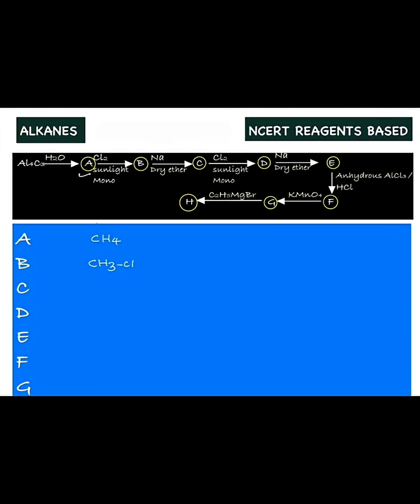B on reaction with sodium dry ether, alkyl halide on reaction with sodium dry ether that is Wurtz reaction, you will be getting CH3CH3 that is ethane. C is ethane.